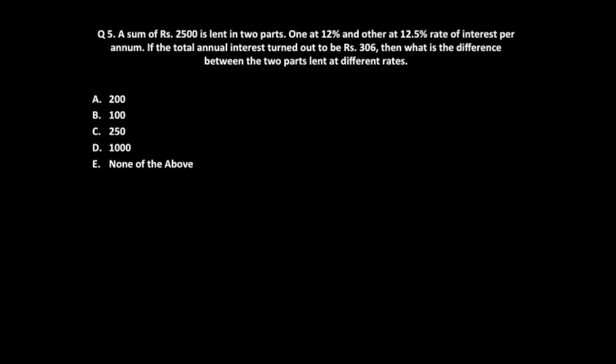This question involves a sum of Rs. 2500 lent in two parts: one at 12% and the other at 12.5%. If the total annual interest is Rs. 306, what is the difference between the two parts lent at different rates? There are multiple ways of solving this question, and we'll look at all of them.